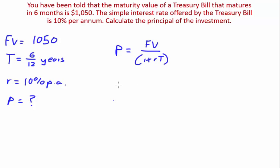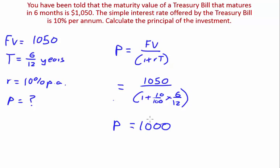This equals 1050 on one plus 10% multiplied by t, which is six on 12. What you have as your principle is $1,000. And that concludes our video. Thank you for watching.